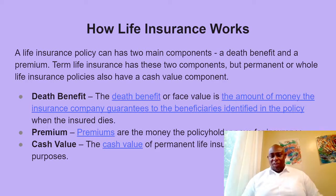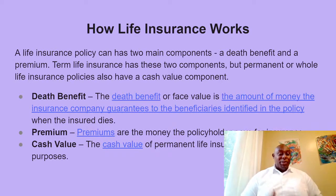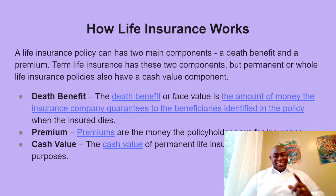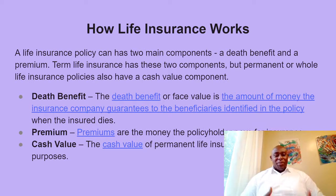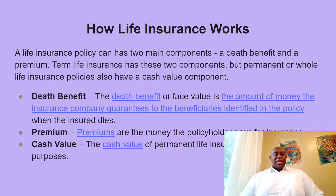So you either have term or you have whole life. If you have whole life, you have a cash component built in. If you have term, you have a premium component. They both have a premium component, but the difference is that one of them is going to bring some funding back — you get some money back.